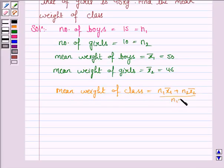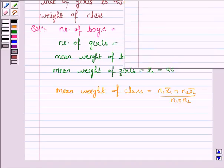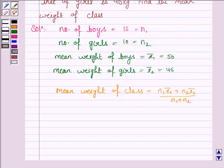As we know that the mean is given by the formula summation FI XI upon summation FI. By the same logic, we find the mean weight of the class here.